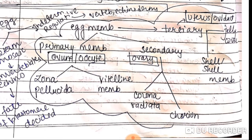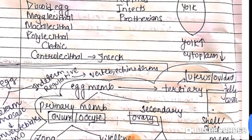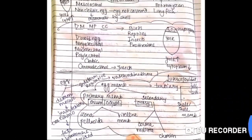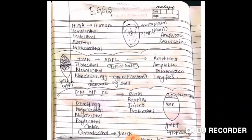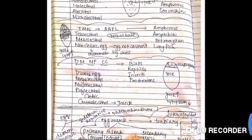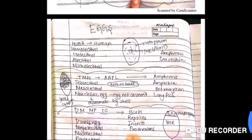The tertiary egg membrane is found as the shell or jelly layer, seen in the uterus or oviduct. That's all for this topic. If any question is outside of this, you can comment down and let me know. Bye-bye.